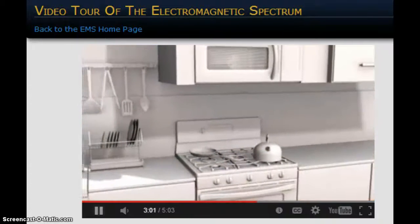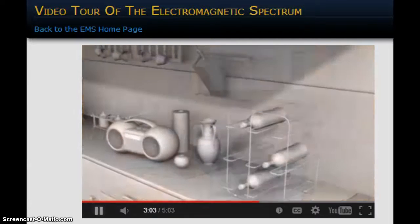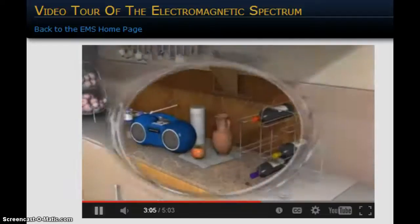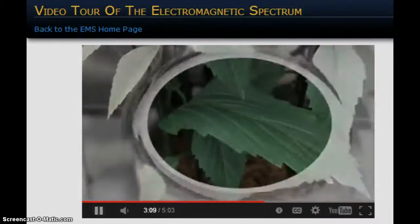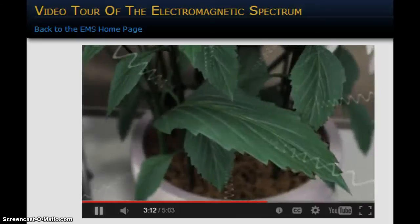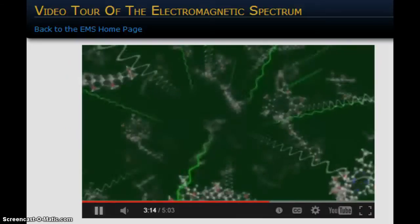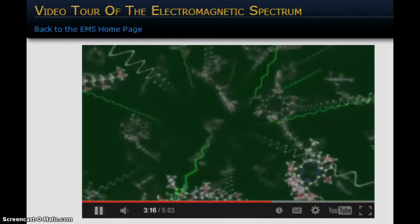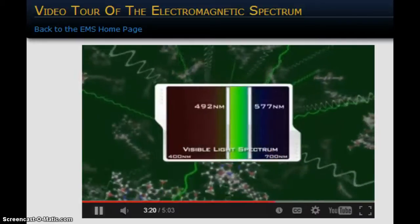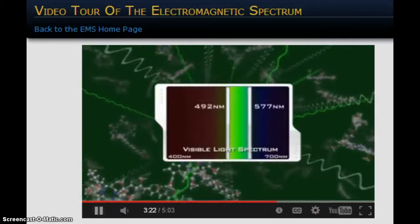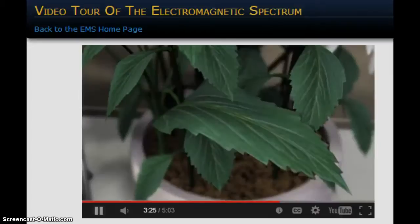Objects appear to have color because EM waves interact with their molecules. Some wavelengths in the visible spectrum are reflected, and other wavelengths are absorbed. This leaf looks green because EM waves interact with the chlorophyll molecules. Waves between 492 and 577 nanometers in length are reflected, and our eye interprets this as the leaf being green.